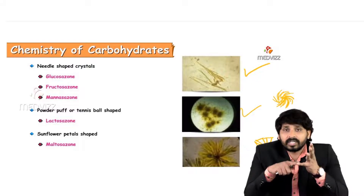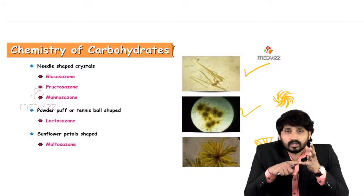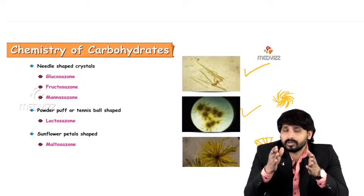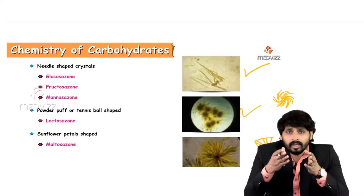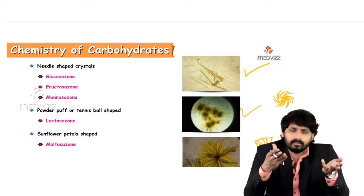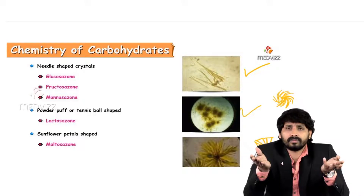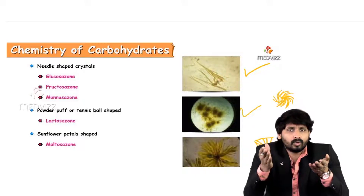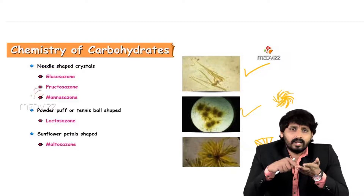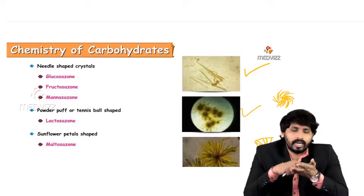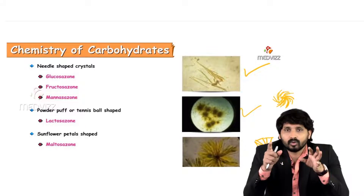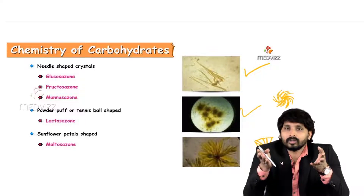To perform the osazone test: take a carbohydrate solution, add phenylhydrazine, and boil for some time — monosaccharides react quickly, while disaccharides take more than 10 minutes. Allow the solution to cool; yellow crystals form. Place the crystals on a glass slide, cover with a cover slip, and examine under a microscope. Needle-shaped crystals confirm glucose or fructose.